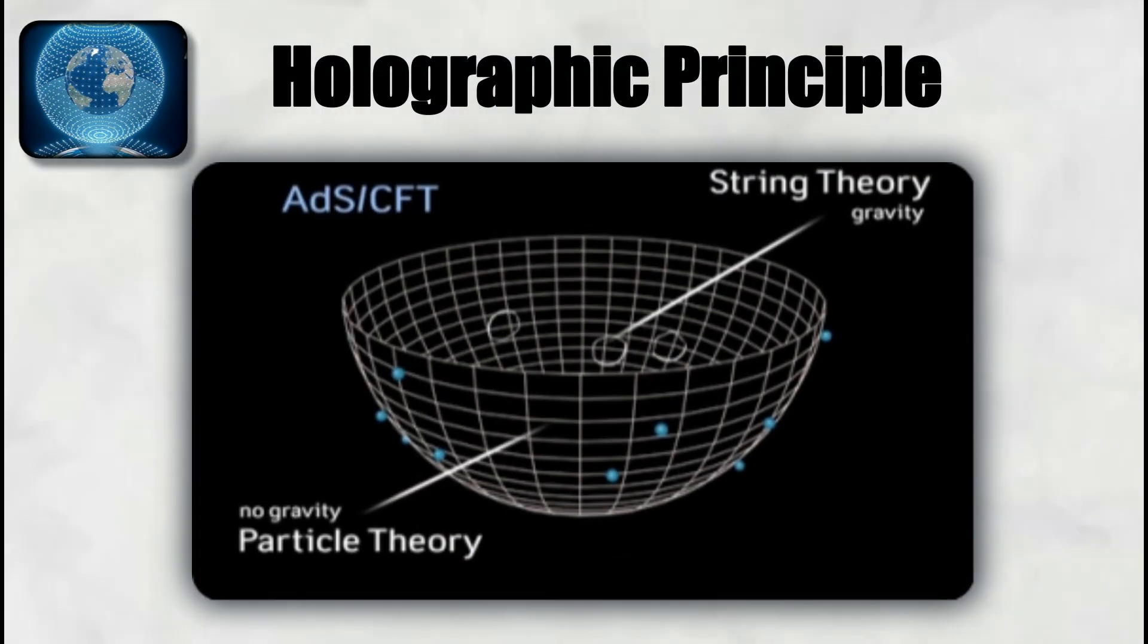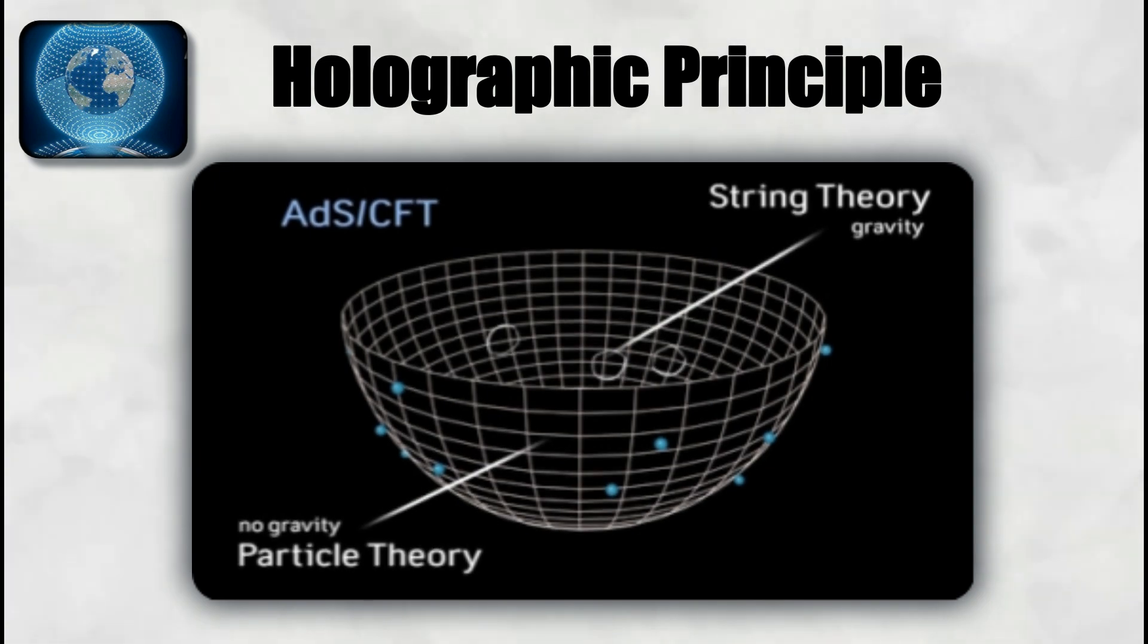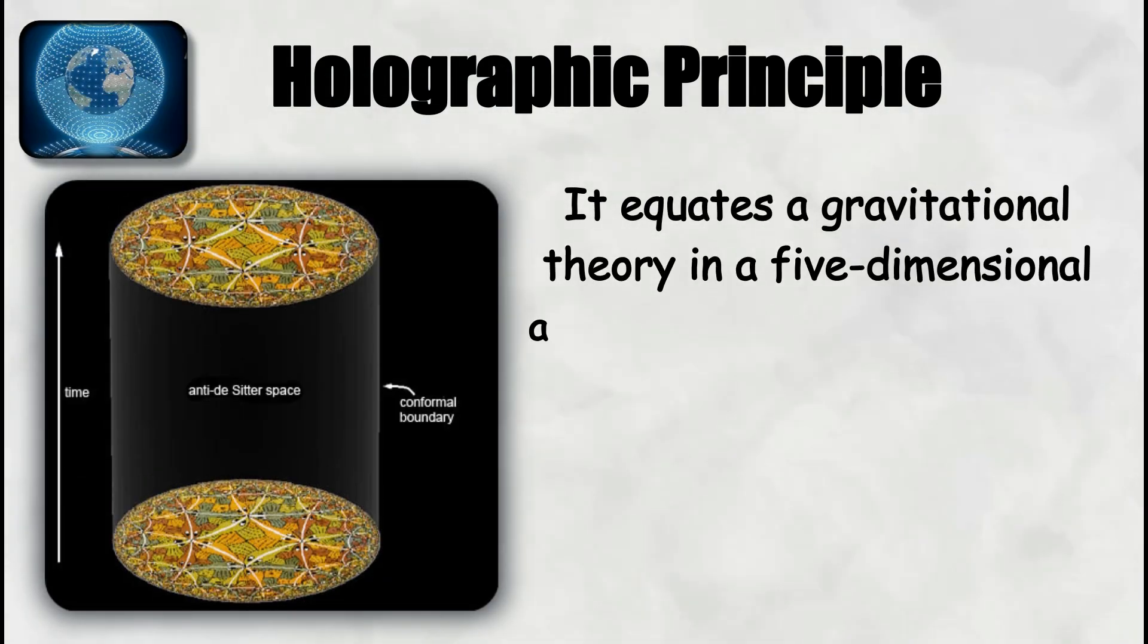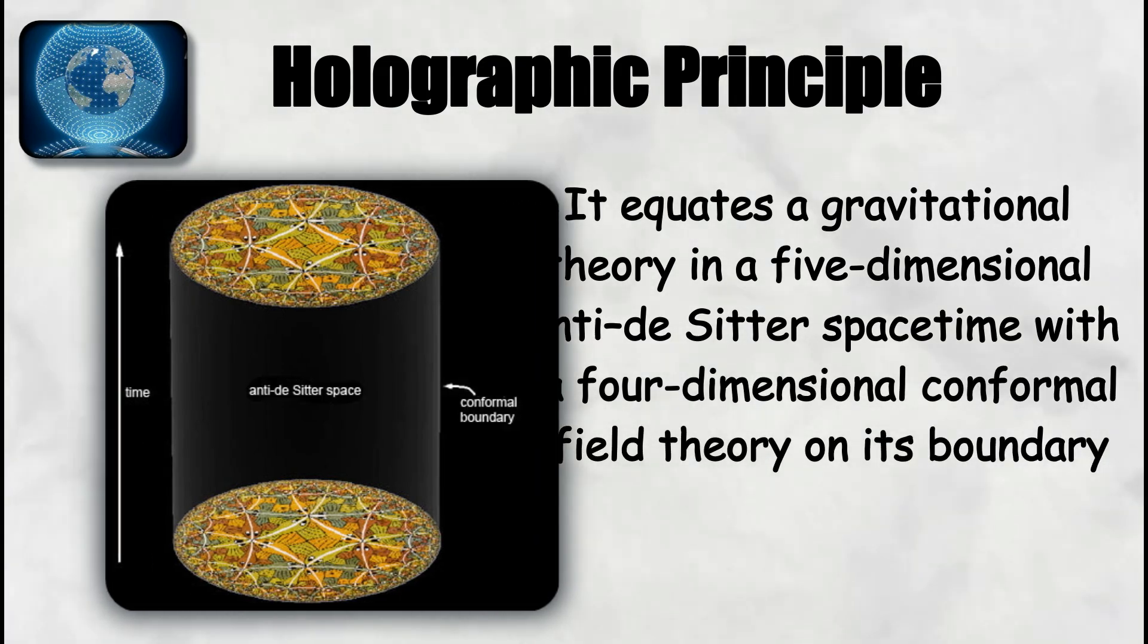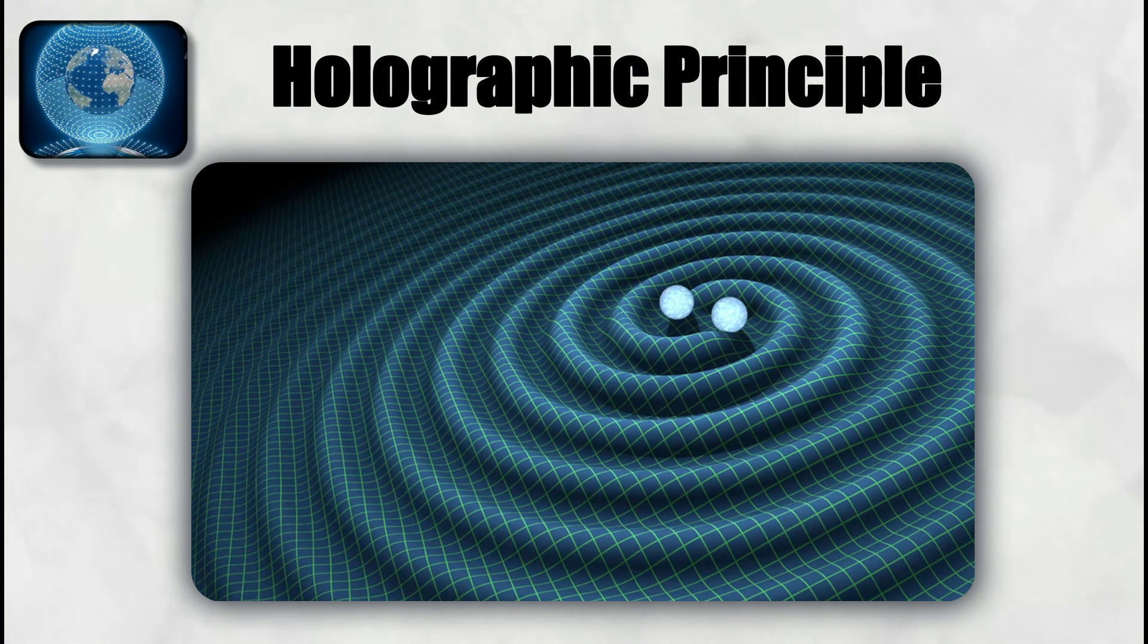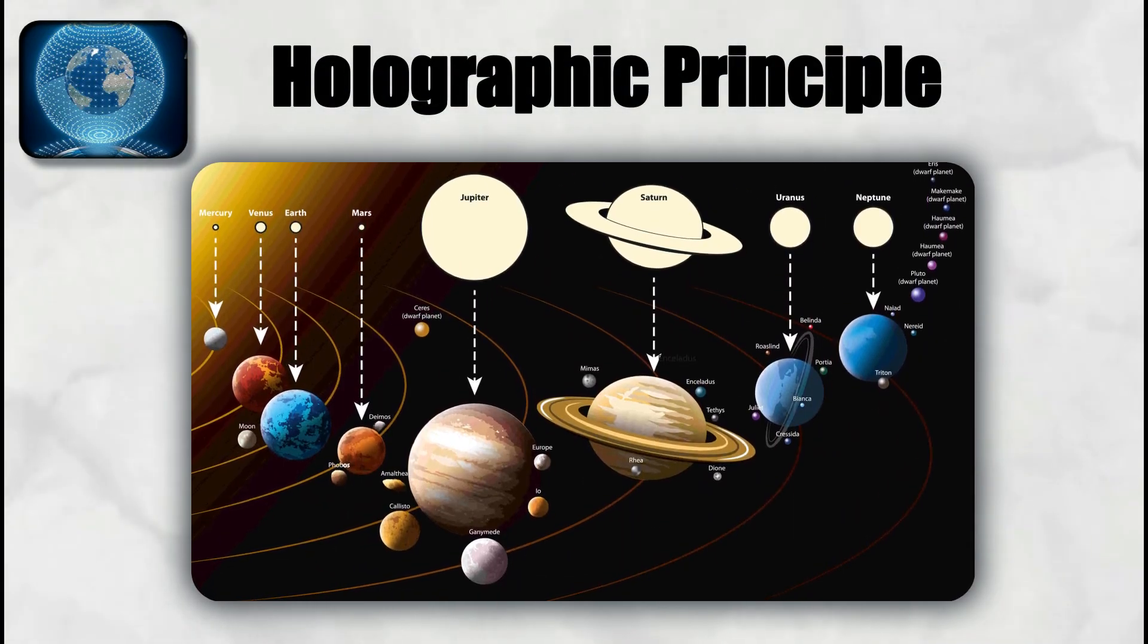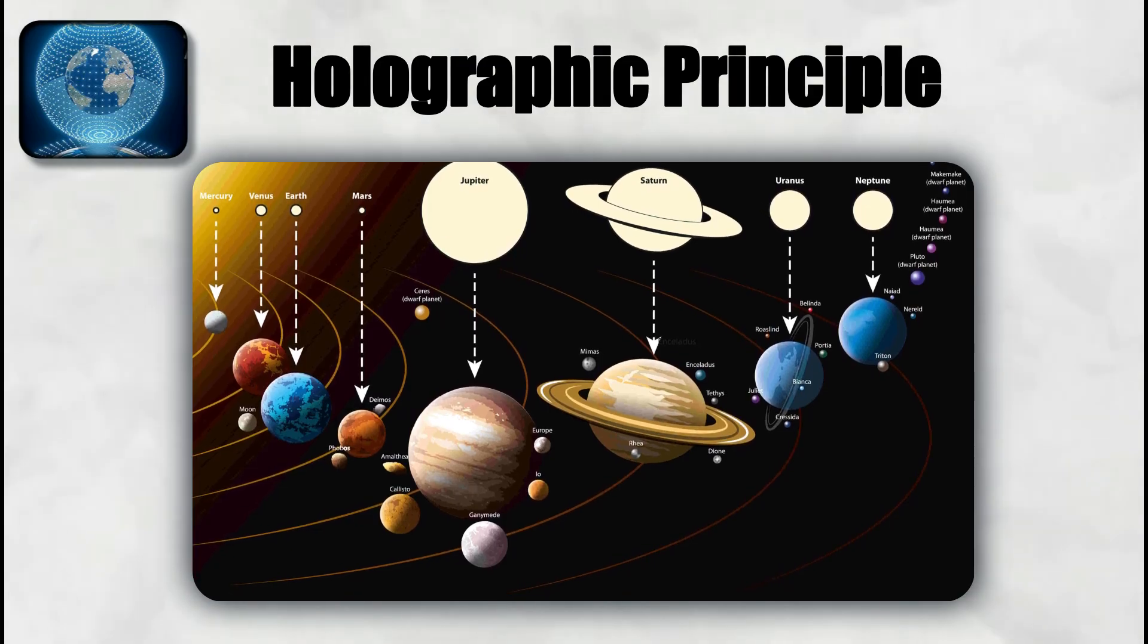The most concrete realization is the AdS/CFT correspondence proposed by Juan Maldacena in 1997. It equates a gravitational theory in a five-dimensional anti-de Sitter spacetime with a four-dimensional conformal field theory on its boundary. This duality shows explicitly how bulk gravity physics, including black holes, can be reconstructed from boundary quantum information. Although our universe is not anti-de Sitter, the correspondence provides a powerful tool for exploring quantum gravity.